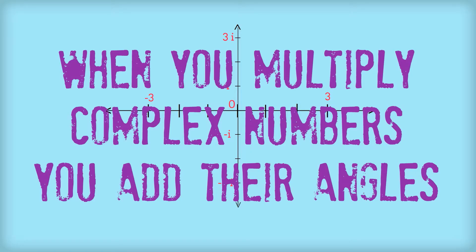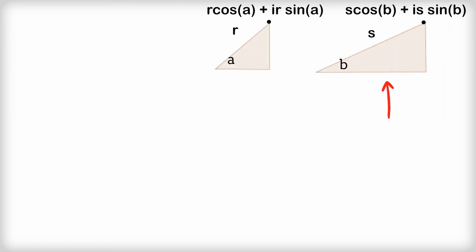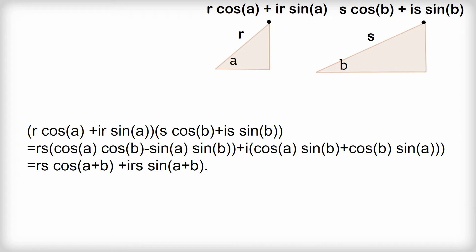Finally, let's prove that multiplying two complex numbers adds their angles. Imagine two triangles: one at distance R from the origin at angle A, and another at distance S from the origin at angle B. The first complex point is R cos A plus I sin A, and similarly for the second. When we multiply them and use the double angle formula for cosine and sine, the end result is a complex number whose angle is A plus B. This confirms that if you multiply two complex numbers, you add their angles.